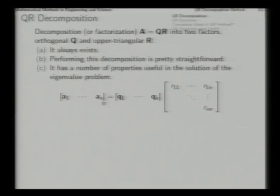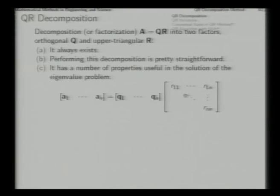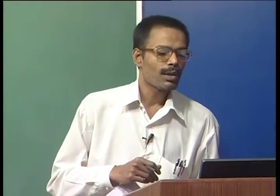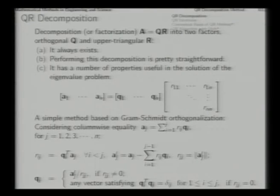Say this is the matrix A in which A1, A2, etc. are columns. This is to be decomposed into Q and R factors: Q is orthogonal, meaning its columns q1, q2, q3 are all unit vectors which are mutually orthogonal, and R is upper triangular — below the main diagonal everything is zero. We determine the decomposed parts through term-by-term multiplication.